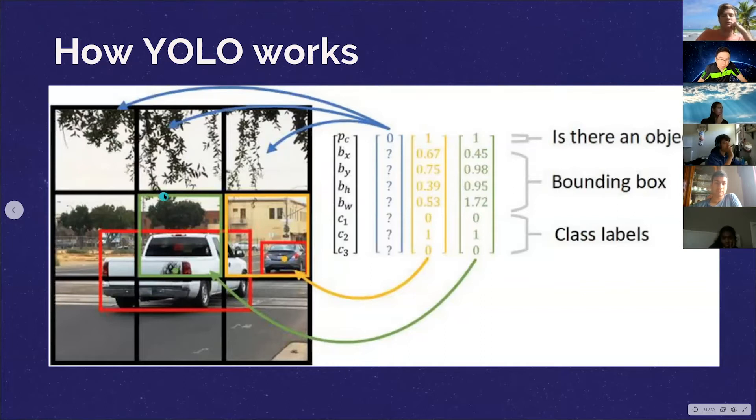Could be maybe car or a cat or maybe a person. But in this case, these are zero. But then you can see for this grid box, right, the yellow one, and this grid box, which are green, you can see we have one here, right? Well, one here, because we know there's an object. And then for the ones that doesn't have any object, we have these BX, BY, BH, and BW, which are bounding boxes.